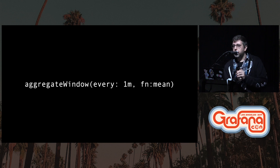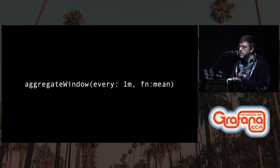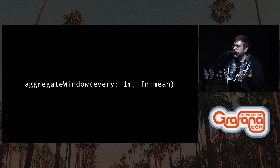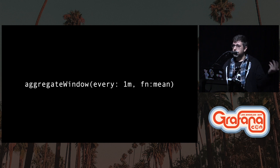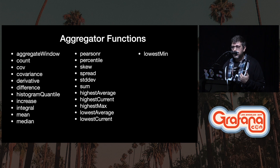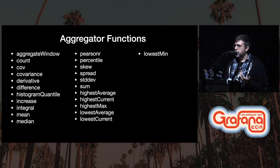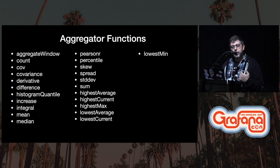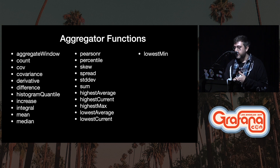There's an additional function we can use — a Flux function written in Flux that's an extension of the window function. It basically lets you automatically apply some kind of aggregation to the data that you've windowed. This could be done directly in Flux yourself, but we've written a helper function to make it a little bit easier. There are a lot of aggregator functions already added to the language. You can find more details in the spec file in the Flux repo as well as in the help documentation online. They let you do everything from counts to covariance, derivatives, histogram quantiles, integrals, and medians.